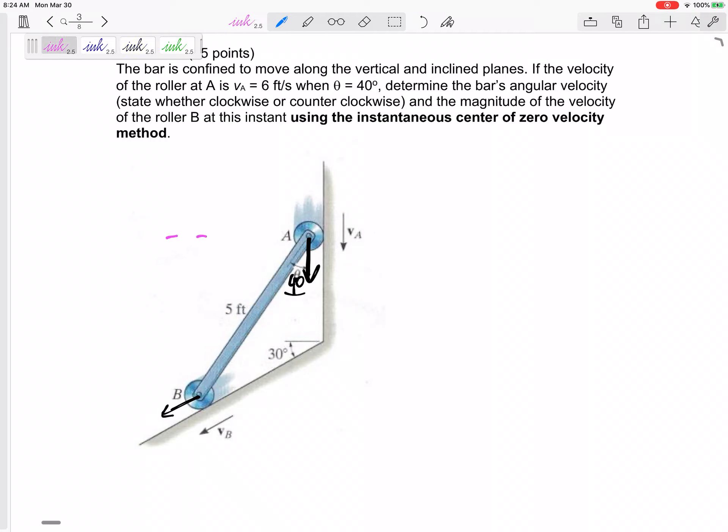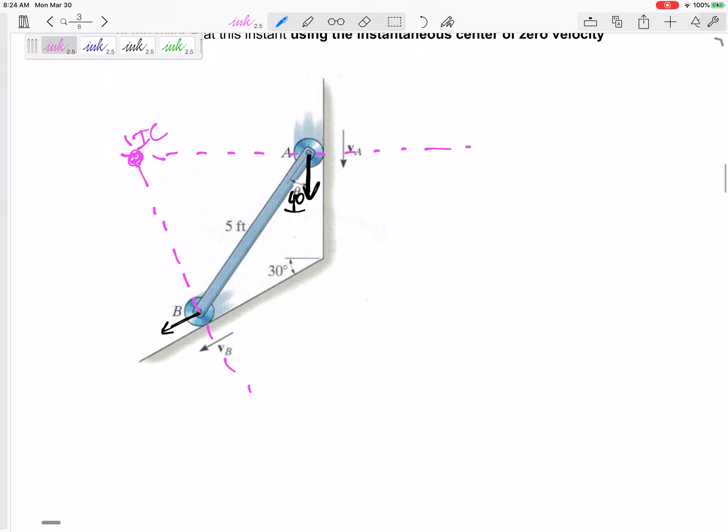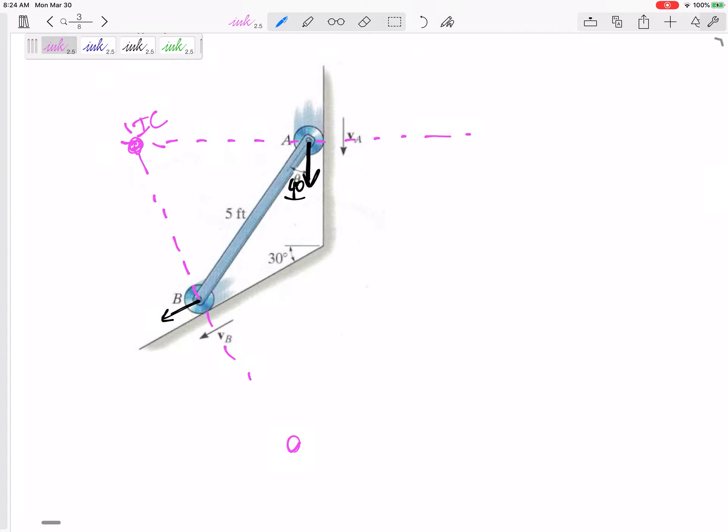So my dotted lines, my lines that are perpendicular are right here. So where's the instantaneous center would be right here. Alright, so make sure you can find this. Don't tell me the instantaneous center is down here or right here or here.